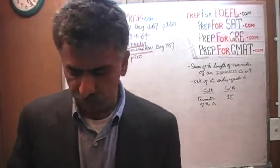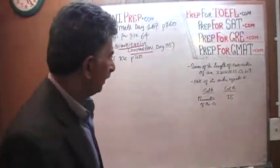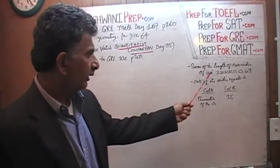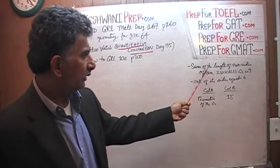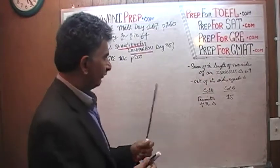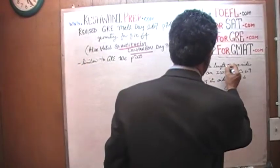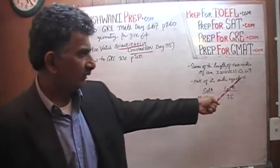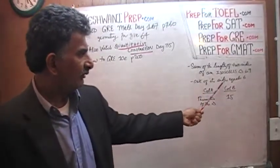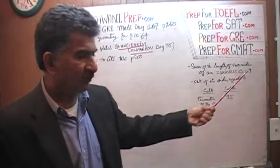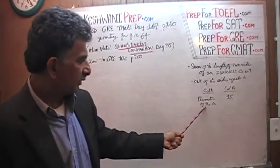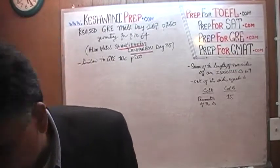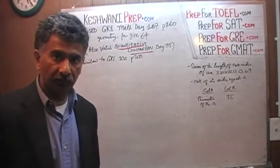Do not continue watching — solve this problem yourself. We are given two bits of information: the sum of the lengths of two sides of an isosceles triangle is 9, and one of its sides equals 6. Column A is the perimeter of the triangle; Column B is 15. I will give you about 5 to 10 seconds to pause and unpause the video. Pause it and solve it.